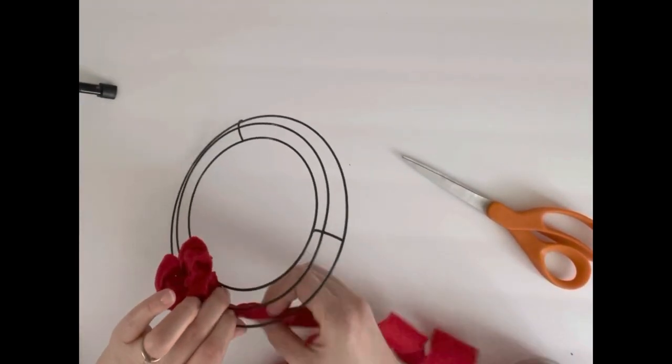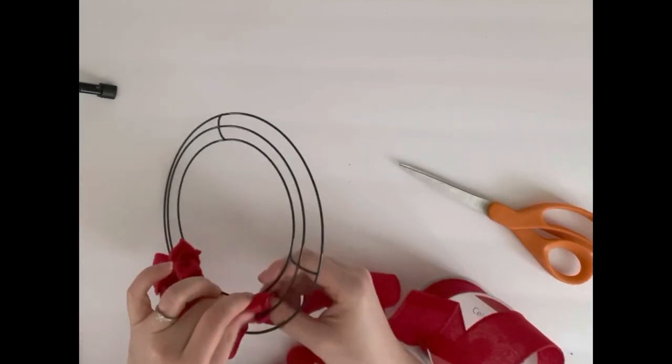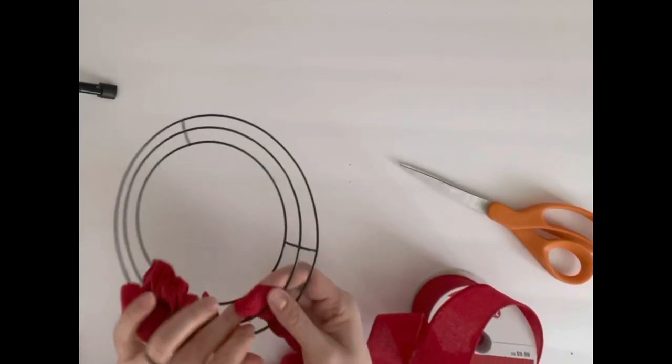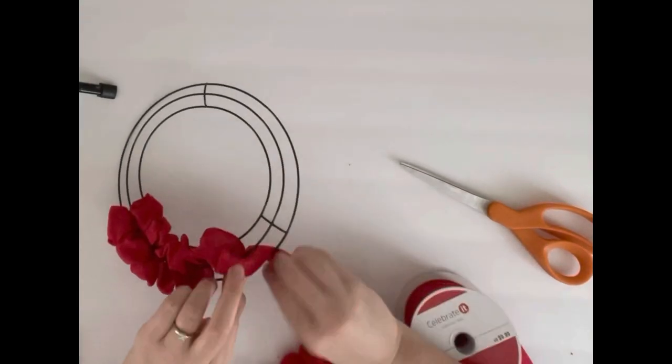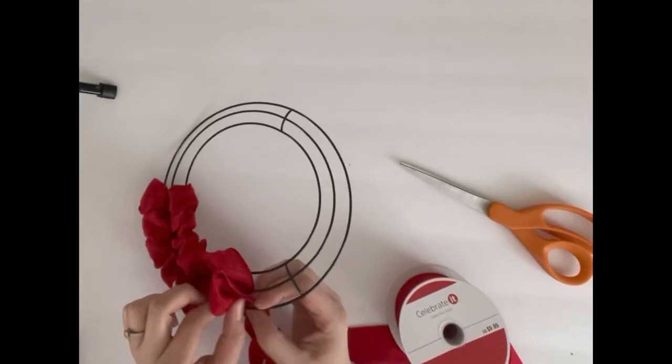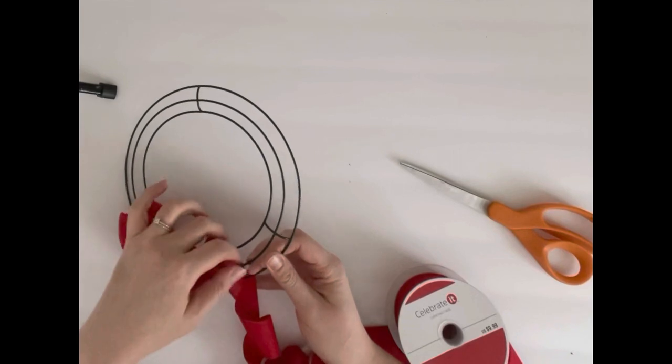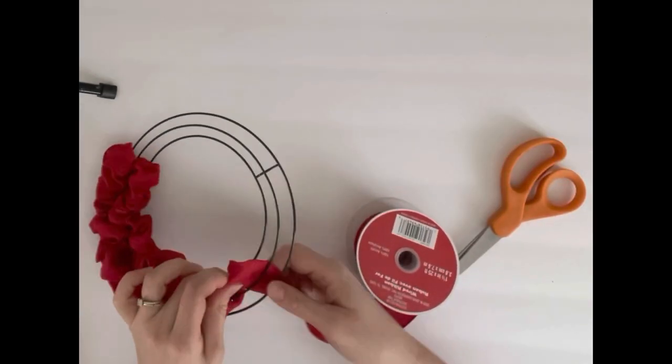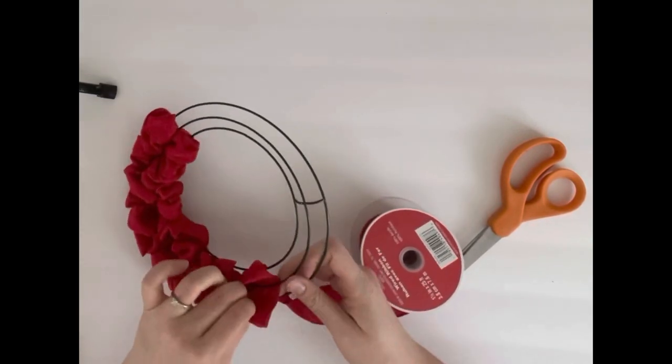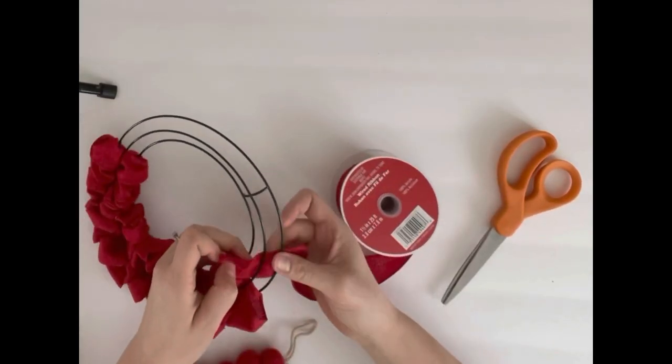You twist on the back side and then pull the ribbon through the first and second section creating little bubbles. When you've done that, flip the wreath over, twist the ribbon on the back side and come back up on the sections on the wreath.